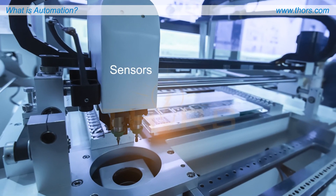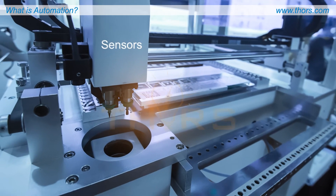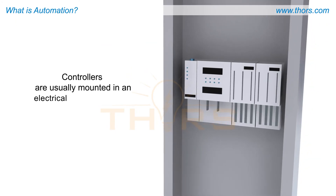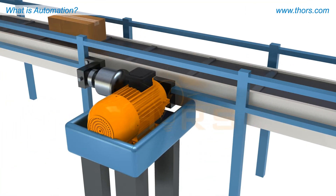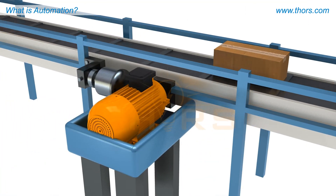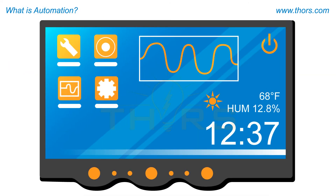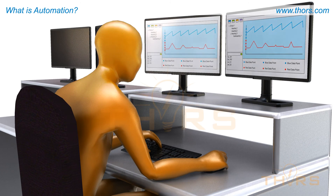Sensors are usually embedded inside of the automation equipment. Controllers are usually mounted in an electrical panel not far from the machine. Actuators will be commanded as a part of the machinery. All of these devices will be monitored on an HMI display near the machinery, in an operator control room, or located remotely.